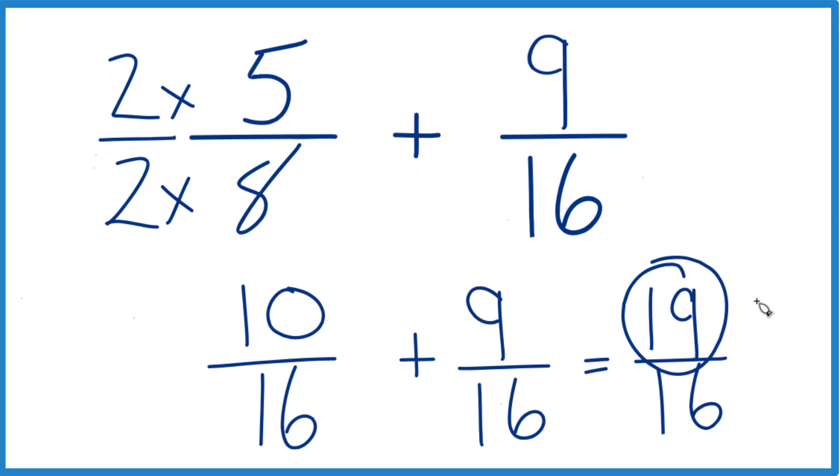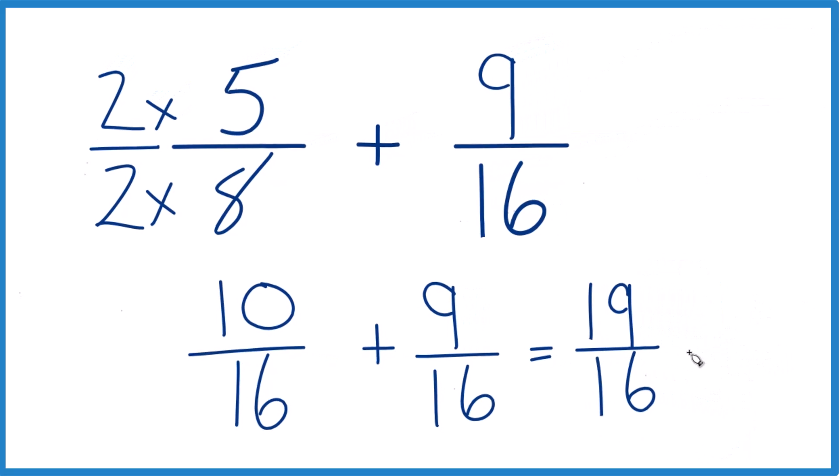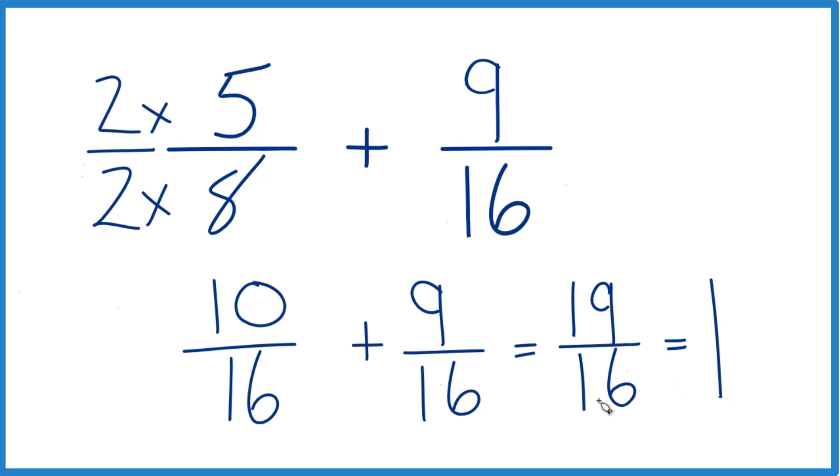Let's change it to a mixed number. Let's see. 16 goes into 19. 1 times 16 is 16. And then we'd have 3 left over. Keep the 16 here across. And 5 eighths plus 9 sixteenths, that equals 1 and 3 sixteenths or 19 sixteenths.